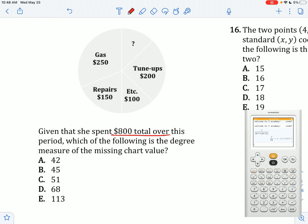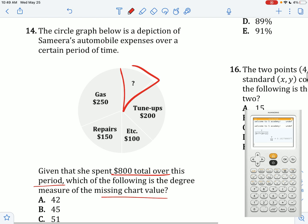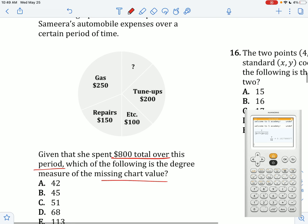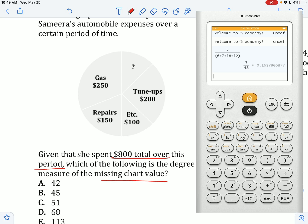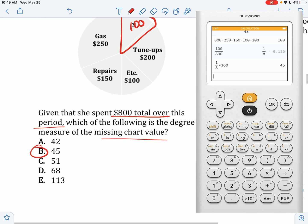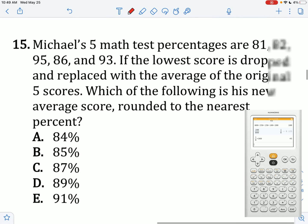The graph below is a depiction of this person's automobile expenses over a certain period of time. Given that she spent $800 total over this period, which of the following is the degree measure of the missing chart value? Let's first find the dollar value. I'm going to do 800 on my calculator, then subtract 250, subtract all of the individual costs. I end up getting $100 here. If I divide 100 by the total amount, I get the proportion, then multiply that by 360 degrees to find what proportion of 360 degrees we end up having.